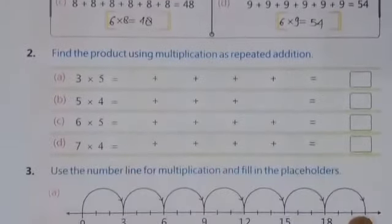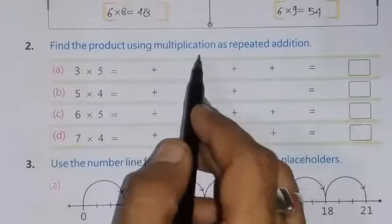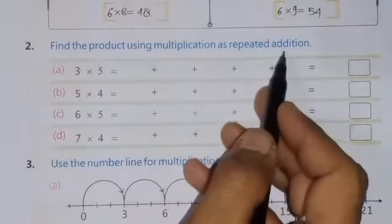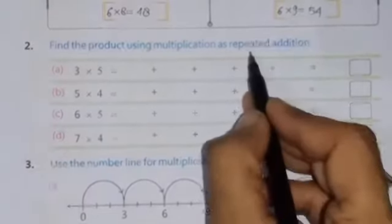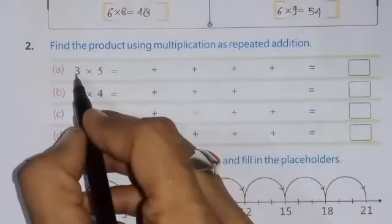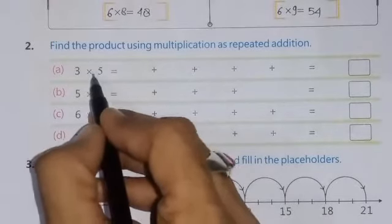See the next question number 2nd. And the question is given: Find the product using multiplication as repeated addition. It means we have to find the answer of this product by repeated addition. So, 3 times 5. What is written here? 3 times 5.